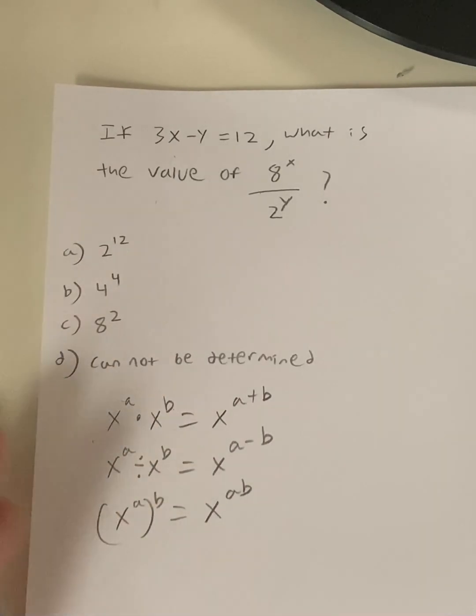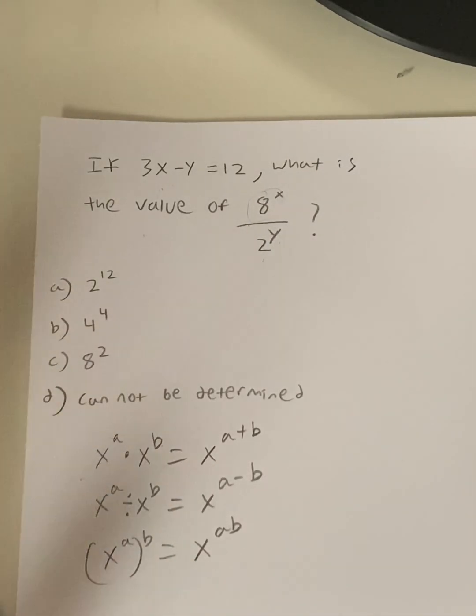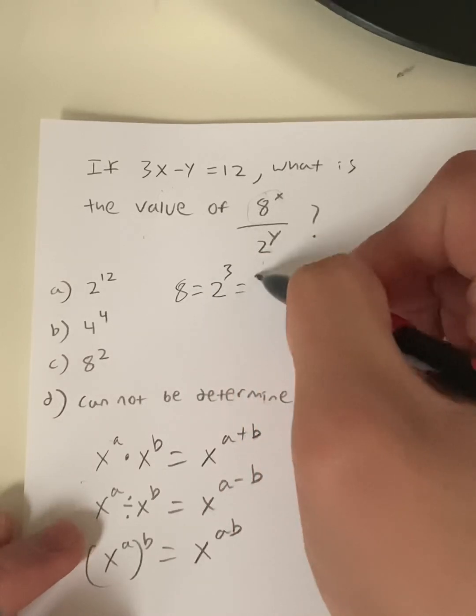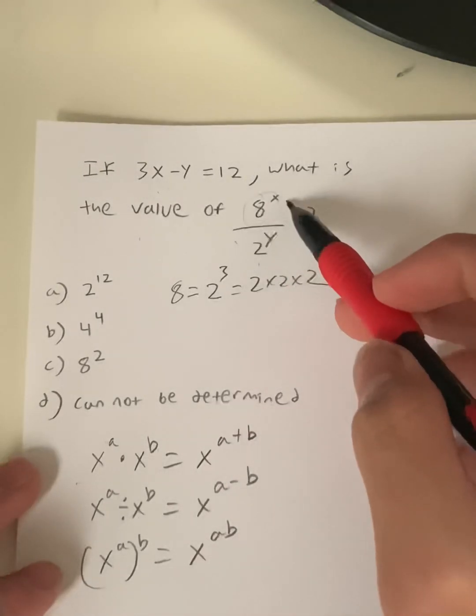Let's look at our question: 8^x / 2^y. Looking at the number 8, this can be rewritten as 2^3, right? It's the same as 2 × 2 × 2. Now 8^x is basically the same as what?